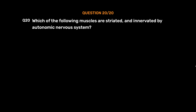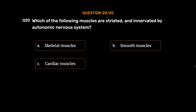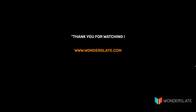Question No. 20. Which of the following muscles are striated and innervated by the autonomic nervous system? Option A. Skeletal muscles, Option B. Smooth muscles, Option C. Cardiac muscles, Option D. Both A and C. The correct answer is Option C, Cardiac muscles.